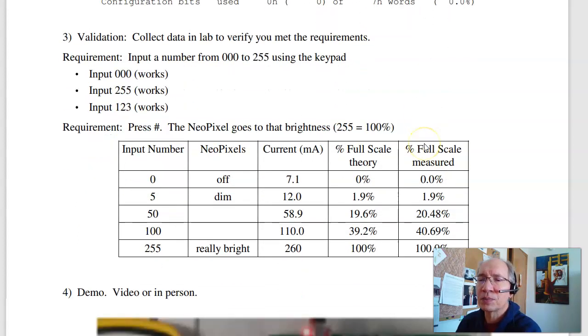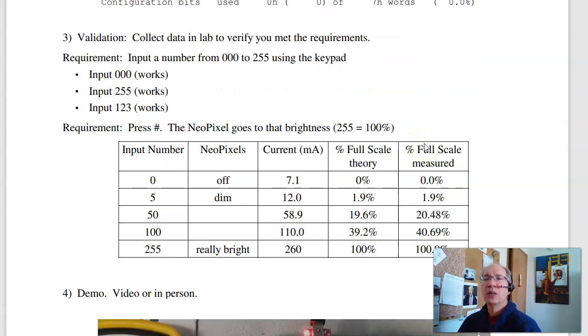In terms of validation, there's a couple ways to validate. What I could do is just input the numbers. And the number 00 works, 255 works, number 123 works. Typically, you check the two endpoints and a couple points in the middle.